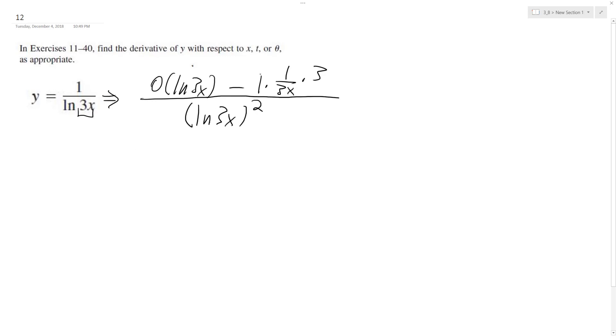So what we end up here with is these 3s cancel off and we get negative 1 over x. And we just do this, negative 1 over x. And then on the bottom here we've got natural log